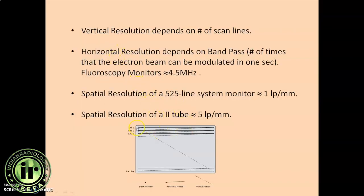By now you have observed that there are rows, horizontal and vertical columns. So vertical resolution depends upon the number of scan lines. The more the number of scan lines the better the vertical resolution. And horizontal resolution depends upon entity called band pass. It is the number of times that the electron beam can be modulated in one second.